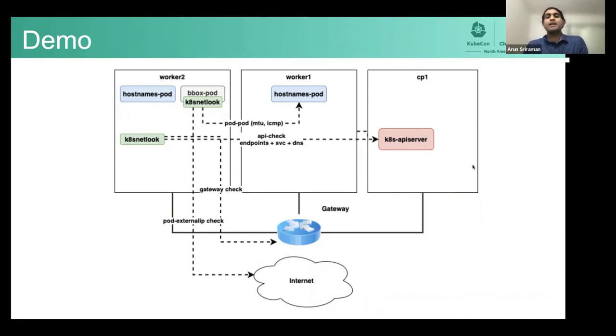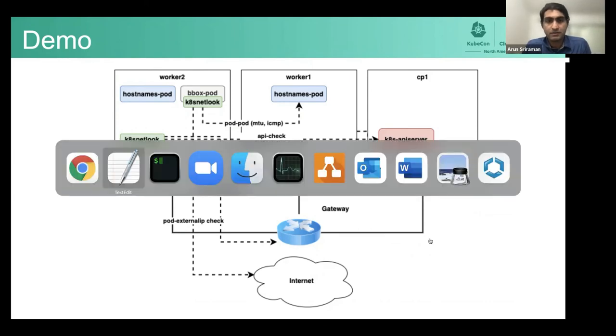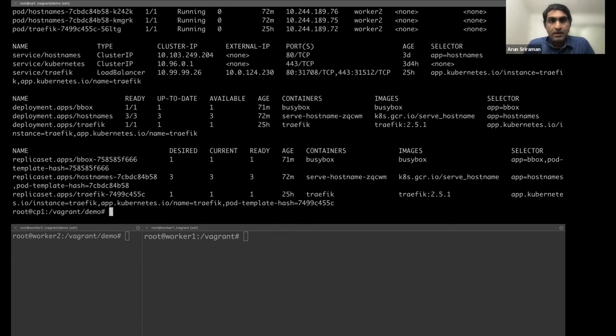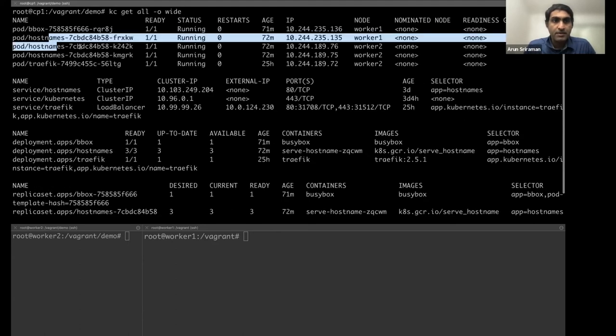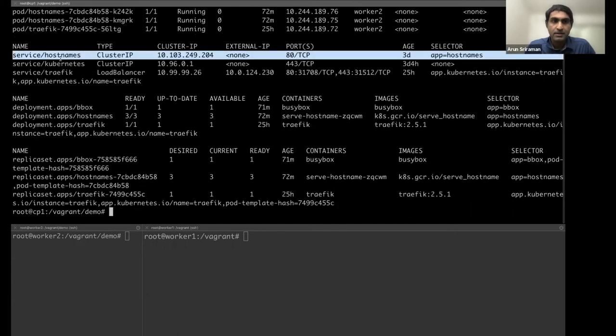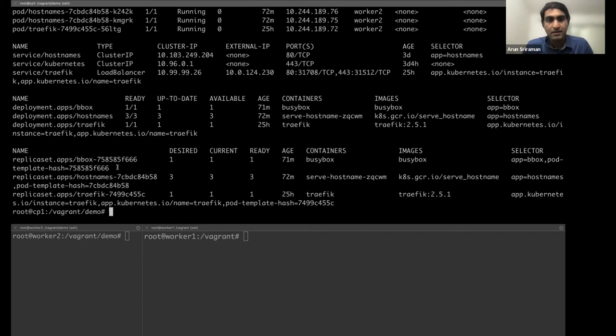So let's quickly take a look at this and switch to the demo. So what you can see here is the number of nodes. And I have a bunch of containers running there. But if you look at kubectl get all -o wide, you'll see that the hostnames app is deployed, busybox is deployed.